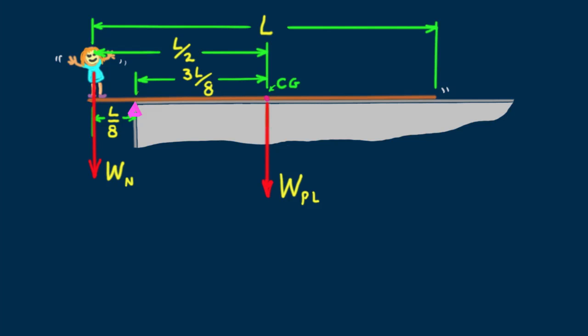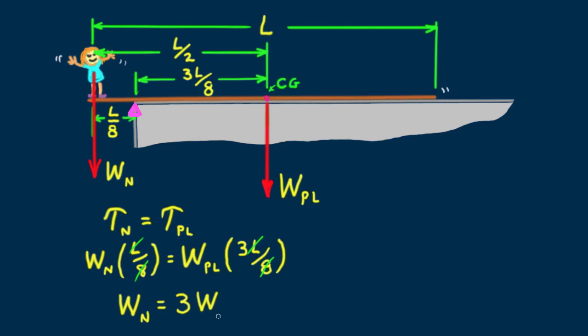And setting the torque due to Nellie's weight equal to the opposite torque due to the weight of the plank, we see that Nellie's weight is 3 times the weight of the plank.